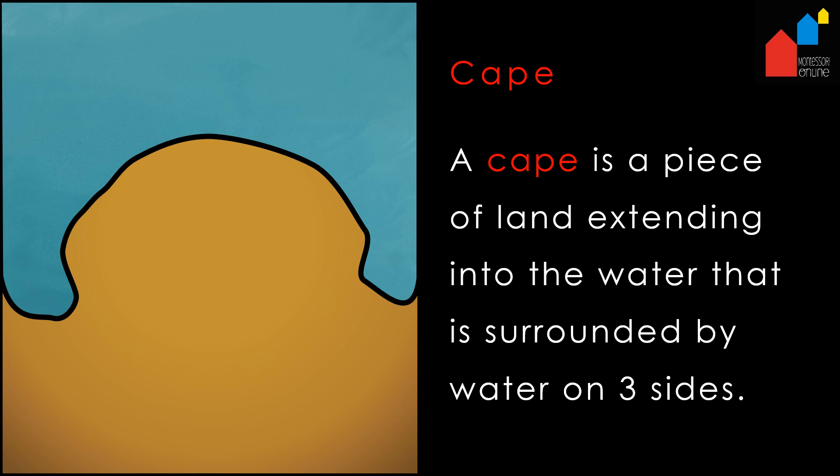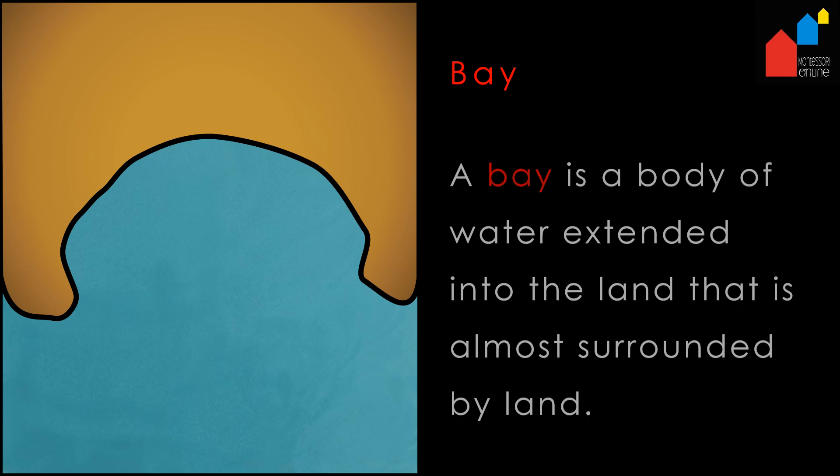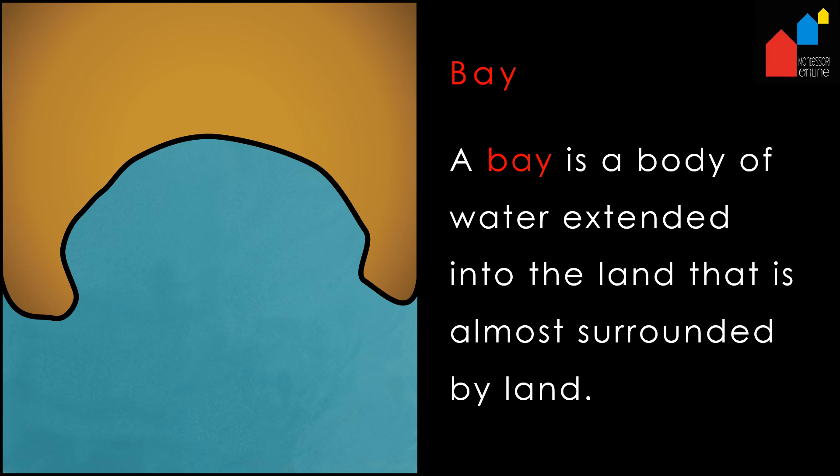A cape is a piece of land extending into the water that is surrounded by water on three sides. A bay is a body of water extended into the land that is almost surrounded by land.